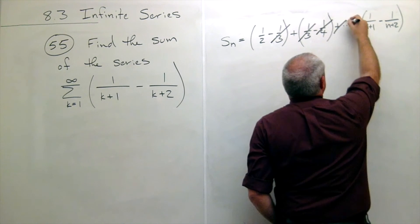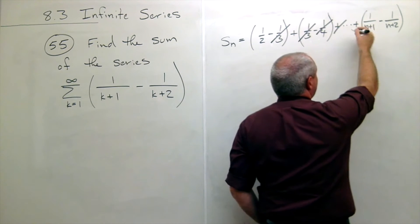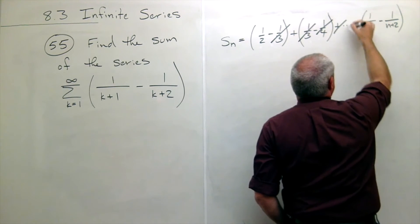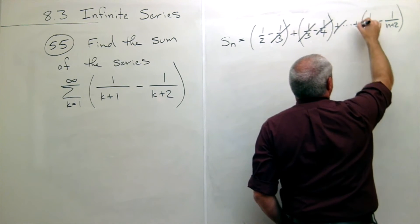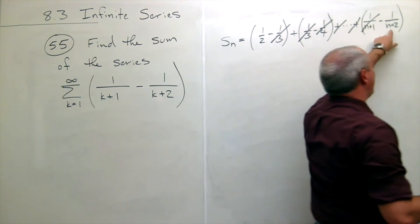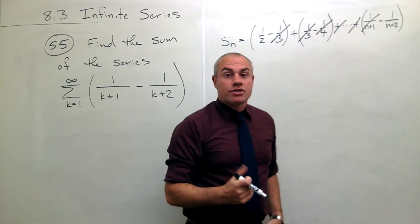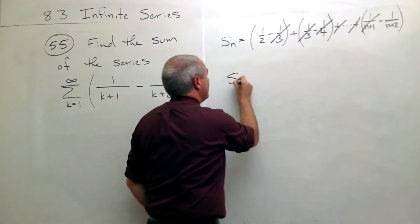Plus a fifth, minus a sixth, plus a sixth, until I get the very last term. Here would be minus 1 over n plus 1 and 1 over n plus 1, but there's no one to cancel out the minus 1 over n plus 2.